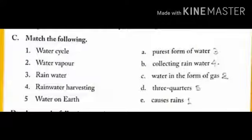Match the following. Number 1: Water cycle matches with e, causes rains. Number 2: Water vapour matches with c, water in the form of gas. Number 3: Rain water matches with a, purest form of water. Number 4: Rain water harvesting matches with b, collecting rain water. Number 5: Water on earth matches with d, three quarters.